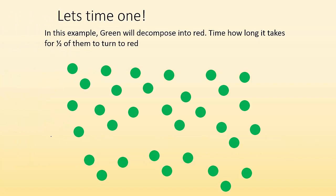So let's time a half-life. In this example, green will decompose into red, and we can time how long it takes for half of them to turn red. So ready, go! And then you start counting, and you got your stopwatch going, and then you keep counting 7,000, 8,000, so this one took 8 seconds.